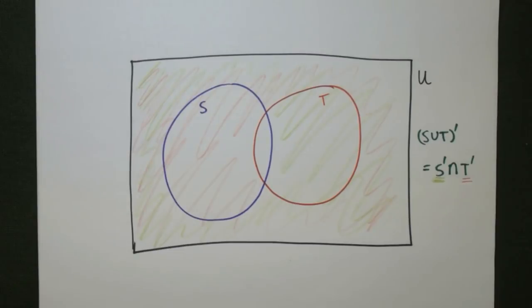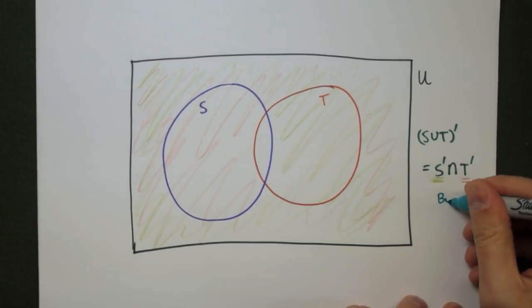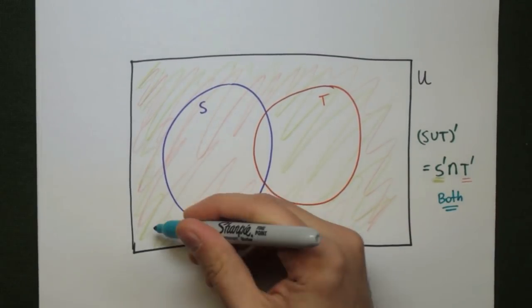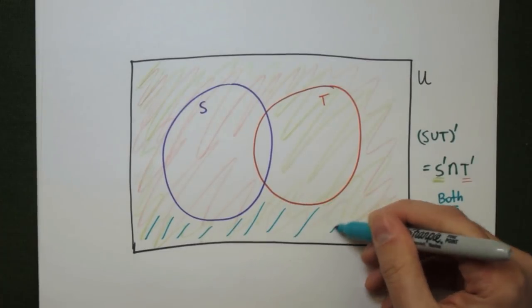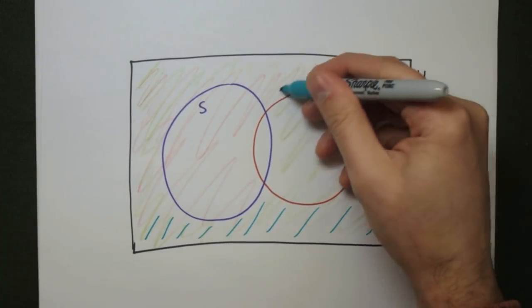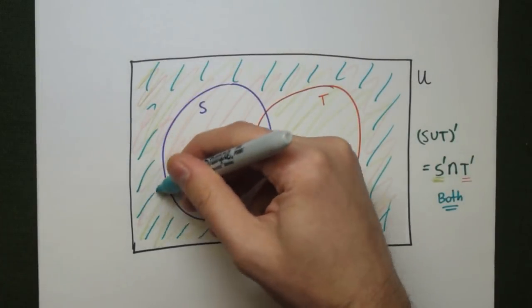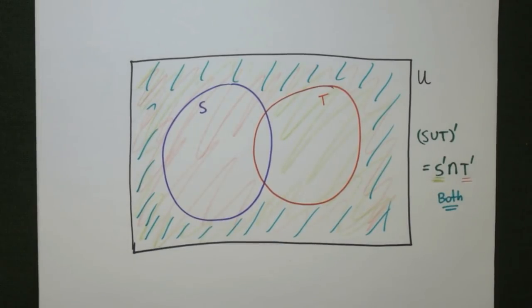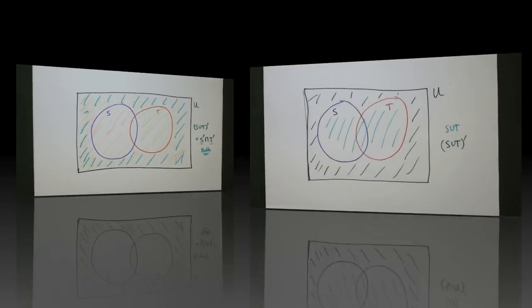So the intersection is going to be everything that's in both, which is everything not in S and not in T. That means everything outside the S and the T circles. That's the same set that we found when we did it the other way, so these two things must be equal.